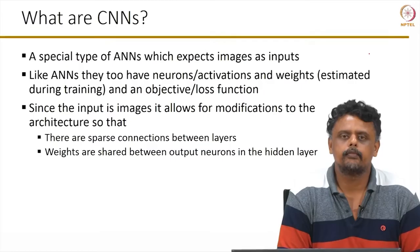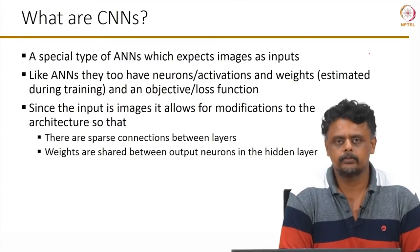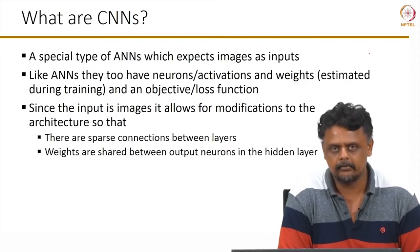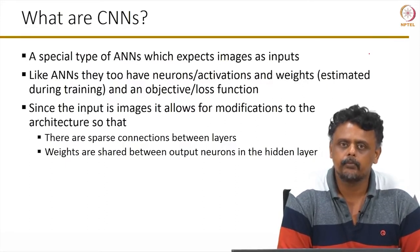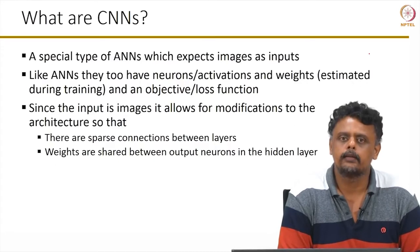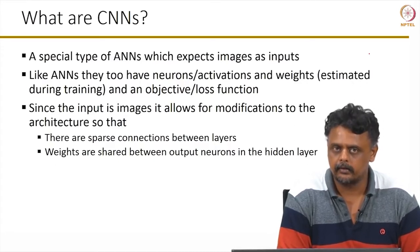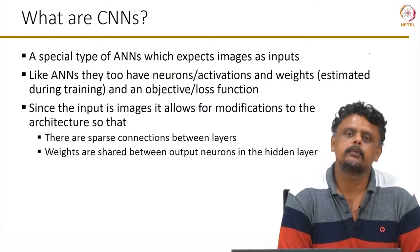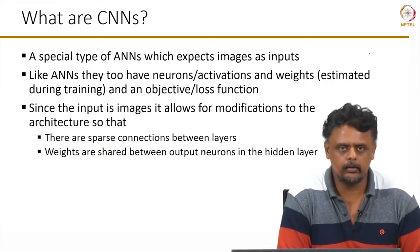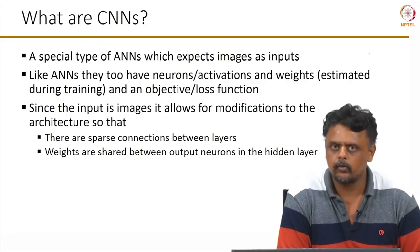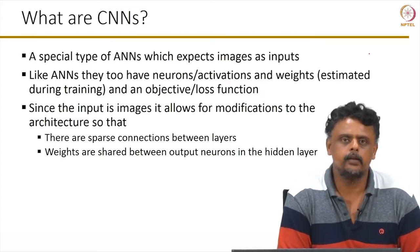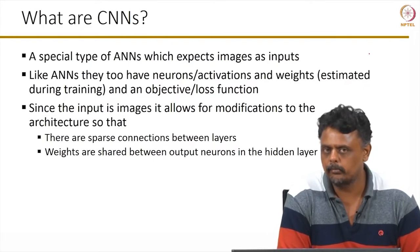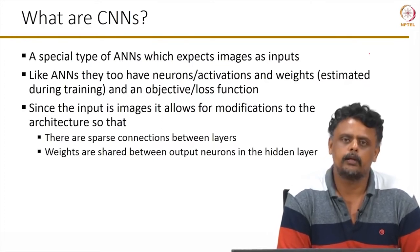Welcome to the series of lectures on convolutional neural networks. CNNs are basically a special class of artificial neural networks that expect images as input. They are designed to work on images, mostly to handle computer vision problems. Like regular artificial neural networks, these networks also have weights, neurons, and bias units, and the weights in these CNNs are also estimated by optimizing an appropriate objective function.